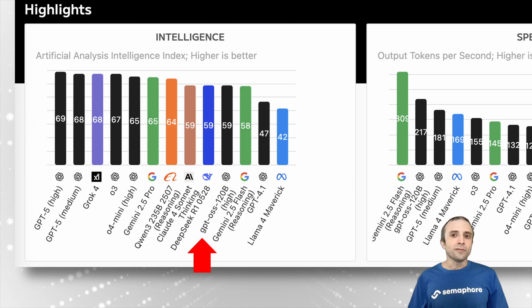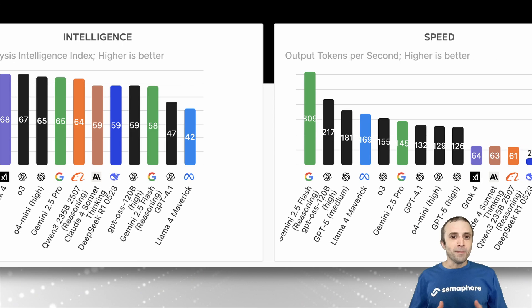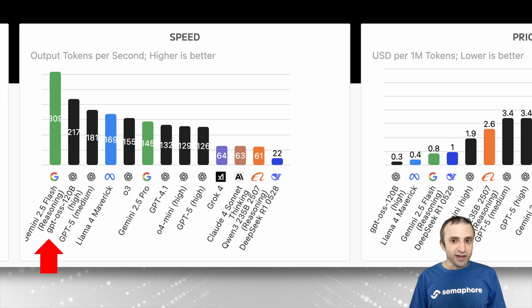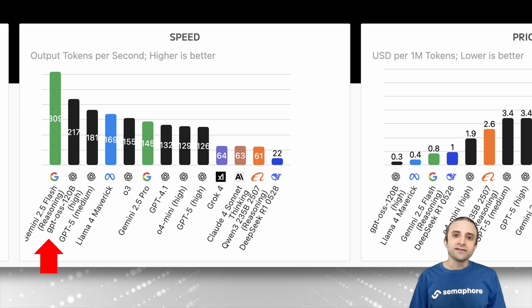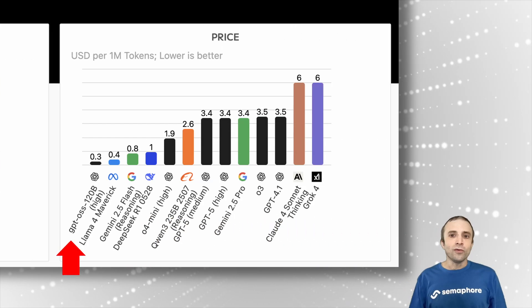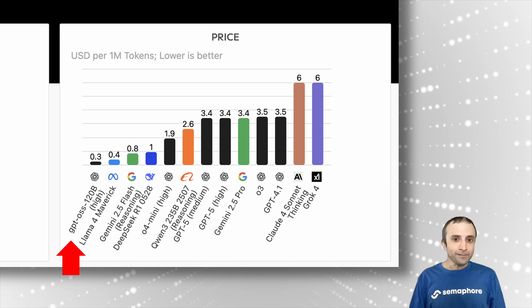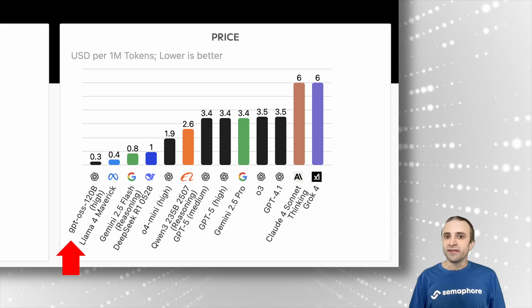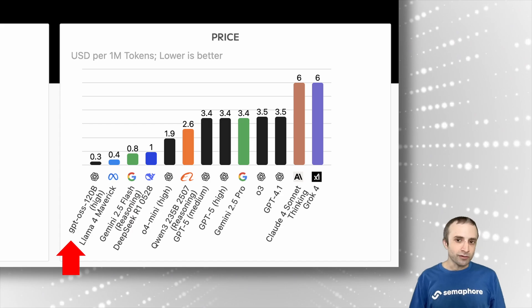It's more or less on par with DeepSeek R1. But when we consider speed, the bigger model is only second to Gemini, so it's a very fast model and considerably faster than GPT-5. What closes the deal is price — the big model is slightly better and cheaper than Llama 3, and it's several orders of magnitude cheaper than the other frontier models.